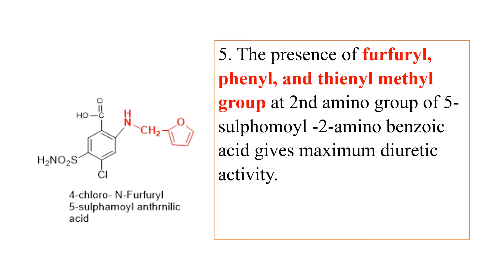The presence of a heterocyclic ring — such as furfuryl, phenyl, or thienylmethyl — at the second amino functional group in the case of 5-sulfamyl-2-aminobenzoic acid derivatives gives maximum diuretic activity. So substituting the second position with a furfuryl ring, phenyl, or thienyl ring — as in furosemide — enhances and causes maximum diuretic action.